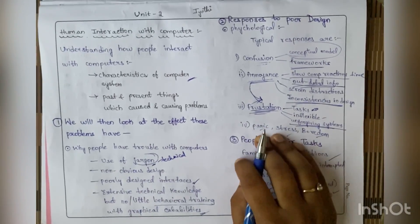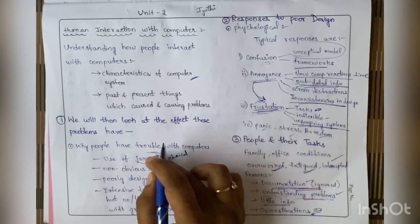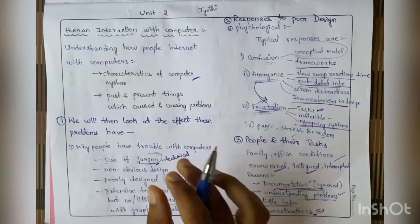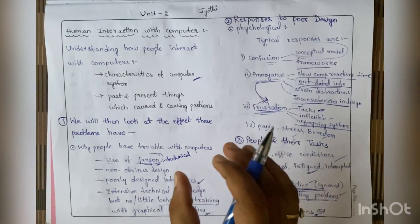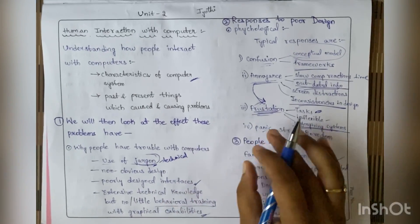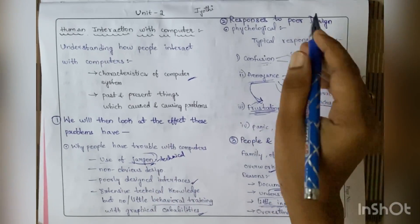One more thing - I have just given the titles, but you need to write a description for everything. For example, here I have 'use of jargon,' so under this you need to write 'usage of more technical terms' - technical terms are not understood by everyone, this may create trouble. For every title you need to give a description.